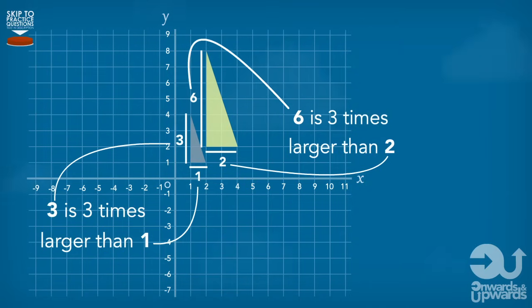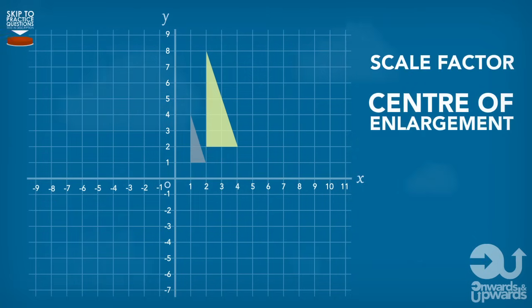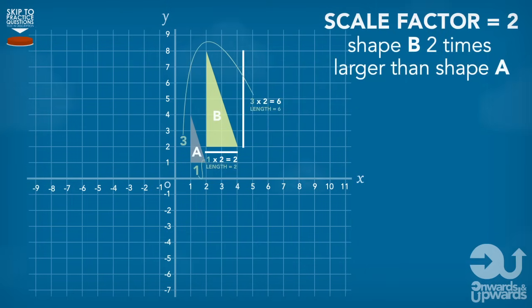In order to do any enlargement, there are two things that we will need: the scale factor and the centre of enlargement. The scale factor is how many times bigger or smaller the size of the new shape will be in comparison to the old shape. If shape A is enlarged by a scale factor of two, all the lengths on shape B, the enlarged shape, will be two times larger.